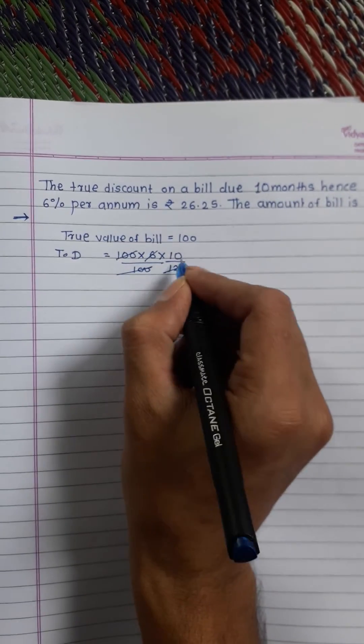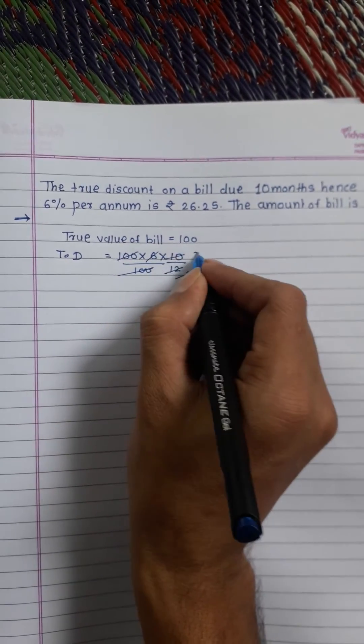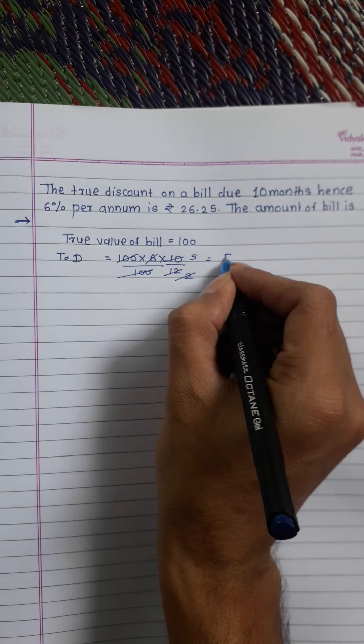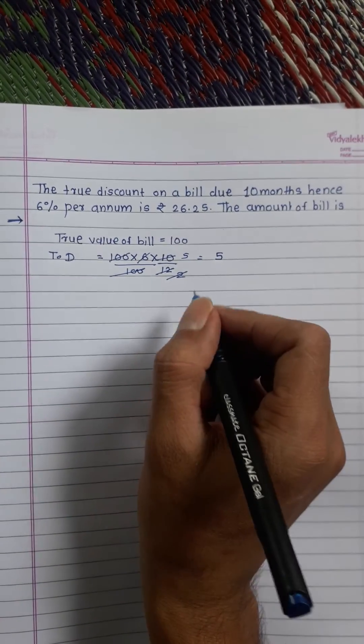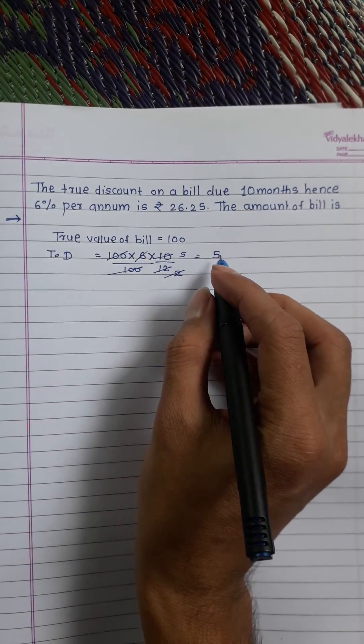This is 100 and cut 6, 100 and 6 to 2, is 2 into 5, therefore true discount is 5. But the value of 5 is given 26.25.